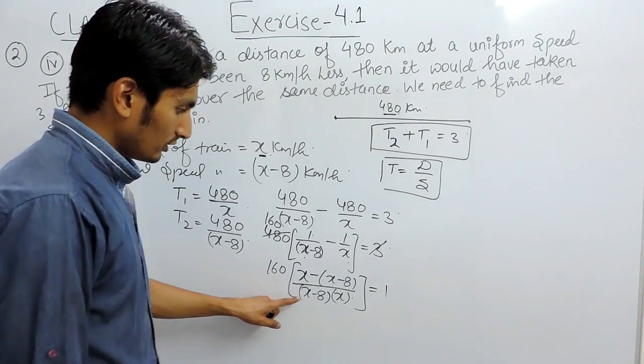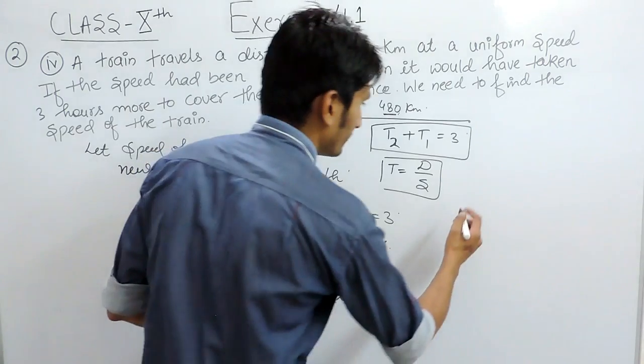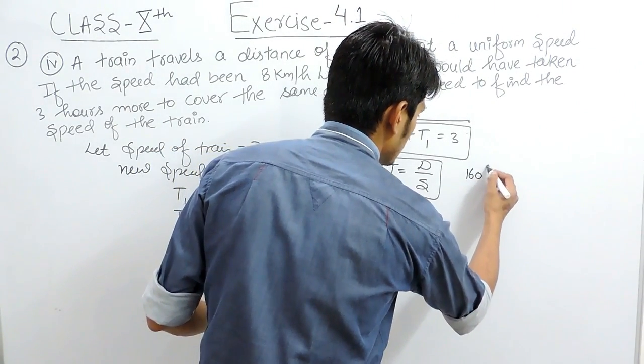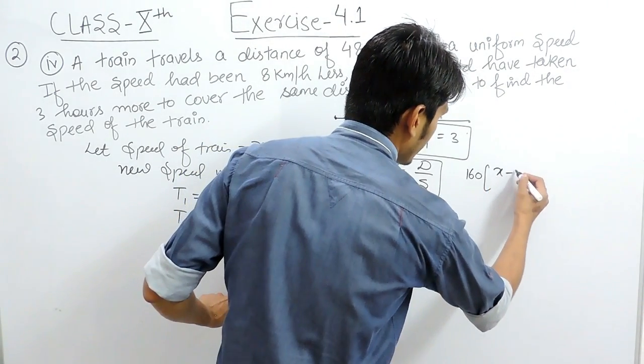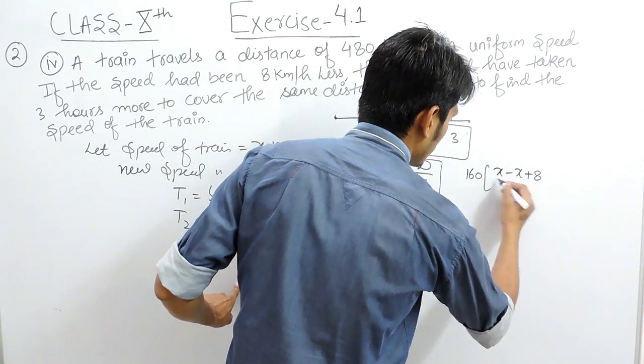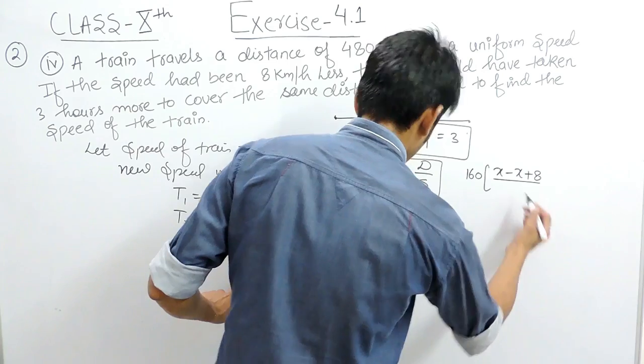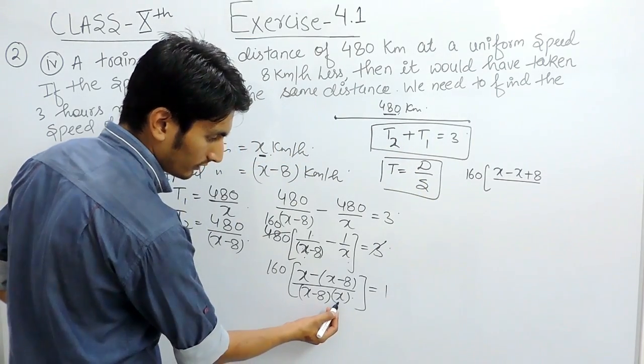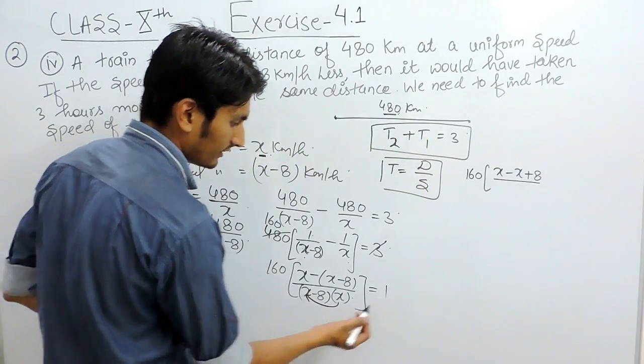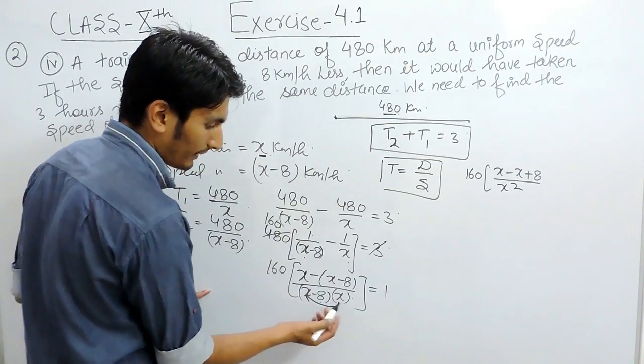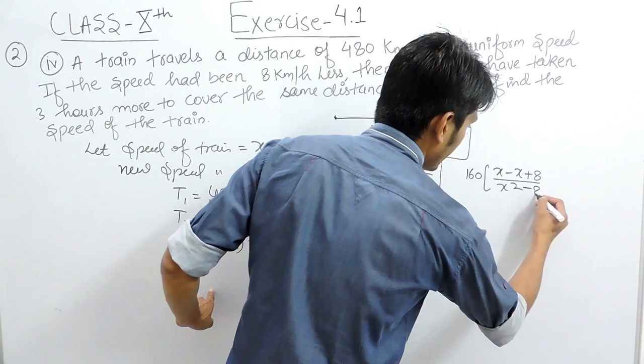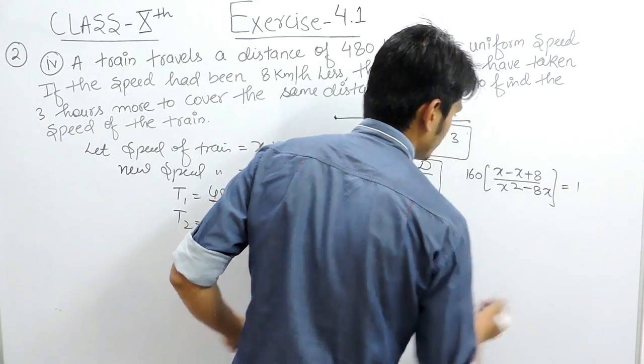Now we can solve this equation further. Opening the bracket, this is x minus x plus 8 upon this, which can further be solved. This multiplied by x will give x squared, and x multiplied by 8 will give minus 8x. This equals 1.